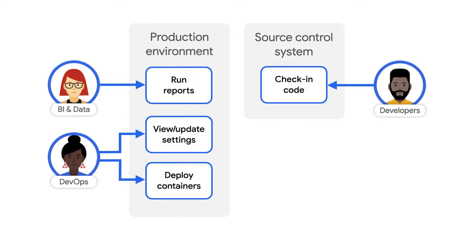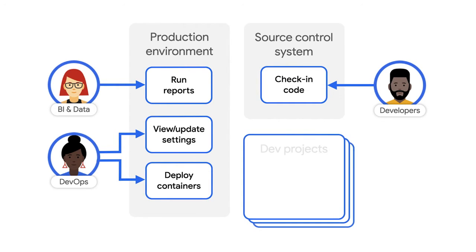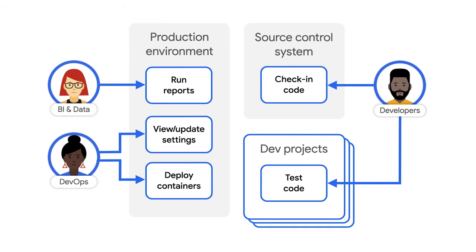And then we have a dev group — they can't view production, but they can check in code. But Kevin, if developers don't have access to the production environment, how do they know what settings and code would work there? We have many dev projects. Developers are free to experiment with settings and test their code in those projects. Every now and then, we destroy the dev projects and create new ones using the settings in our production project.